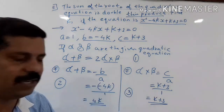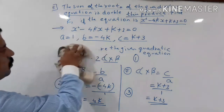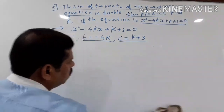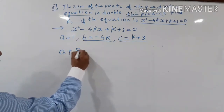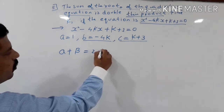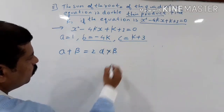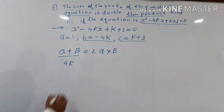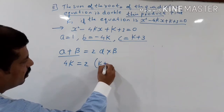Alpha into beta is k plus 3. Now apply the given condition: the sum of the roots equals 2 times the product. So alpha plus beta equals 2 times alpha into beta. Substituting: 4k is equal to 2 times k plus 3.